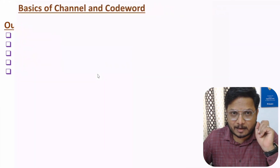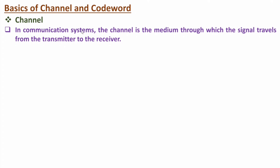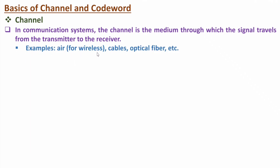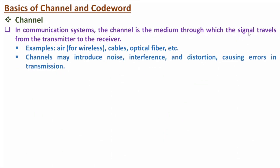So let us start with the first agenda — basics of channel and codeword. A channel is a medium in a communication system through which a signal travels from transmitter to receiver. Examples include wireless channels, cables, or optical fibers. Due to the channel, there will be additional noise with the given signal, and the channel may introduce noise, interference, and distortion, resulting in errors in transmission.